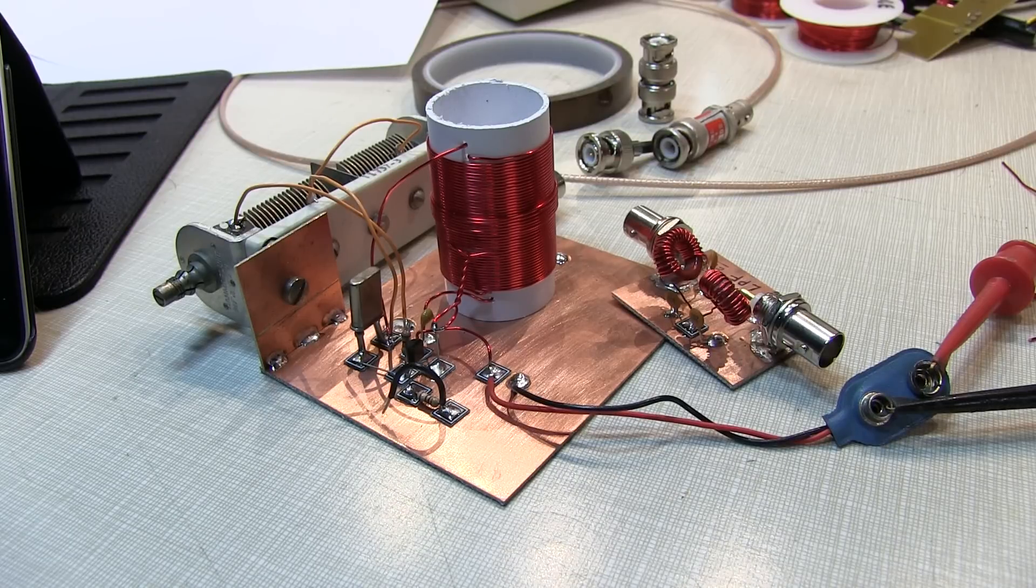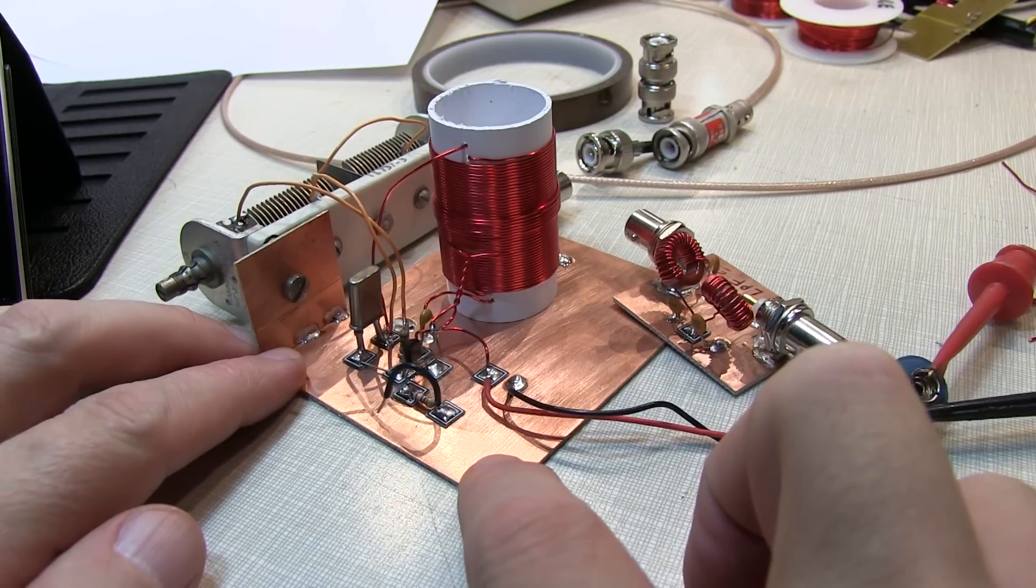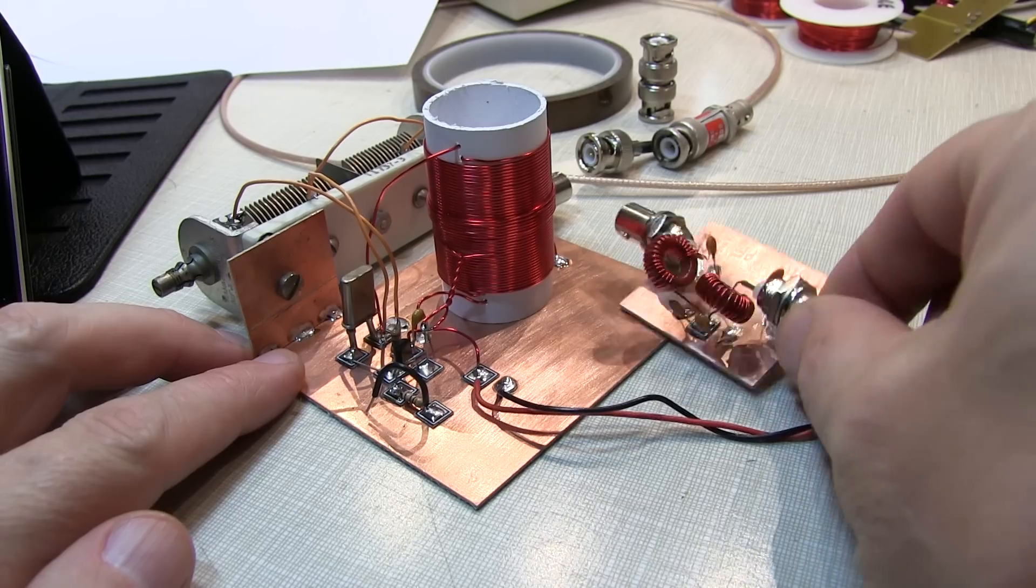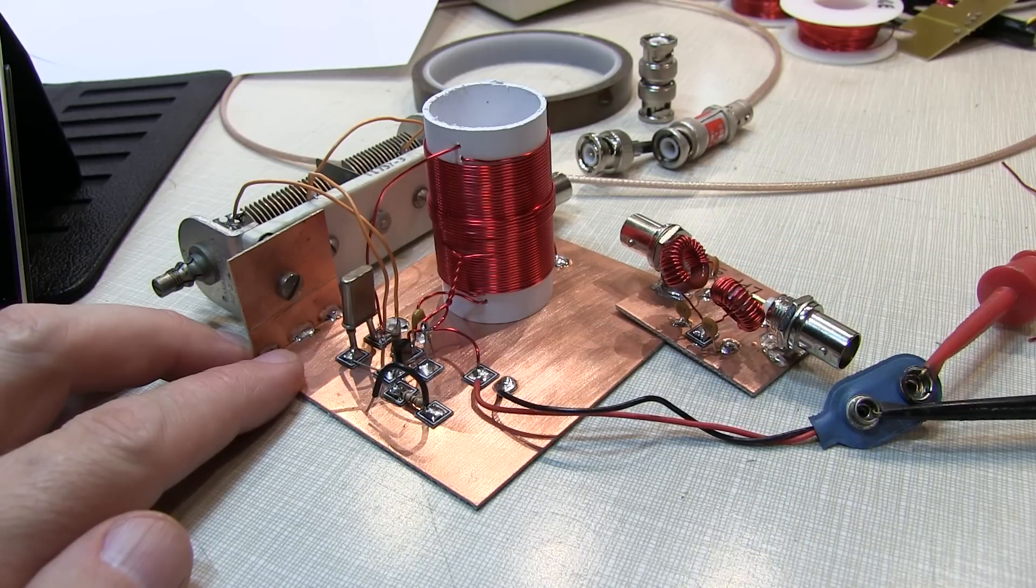Today we're going to have a little bit of ham radio fun, taking a look at this very simple crystal-controlled CW transmitter called a Michigan Mighty Might, and also at a low-pass filter and how that can improve the performance of this simple little transmitter.